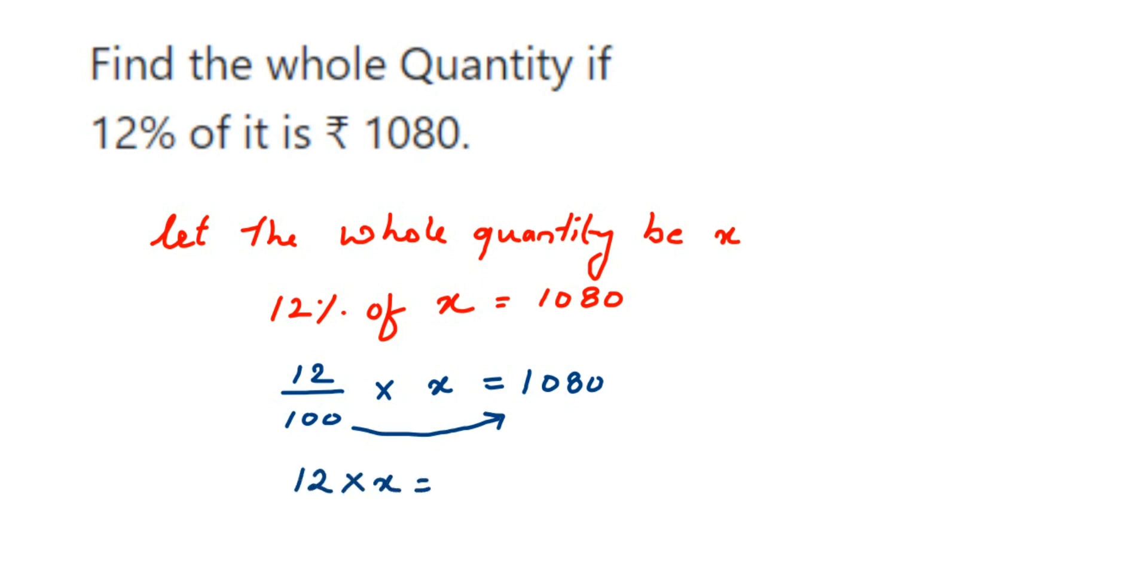Now I'm going to transpose 12 to the other side. So 12 is in multiplication. When you transpose, it comes in division. So x is equal to 1080 multiplied by 100 divided by 12. See, both you can do in one single step. If you know how to do it, you can transpose 100 and 12 in one single step and avoid this step.